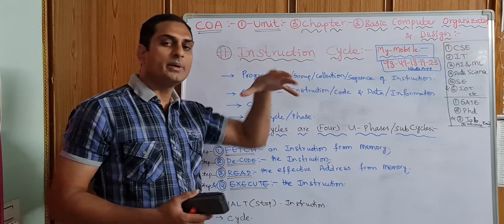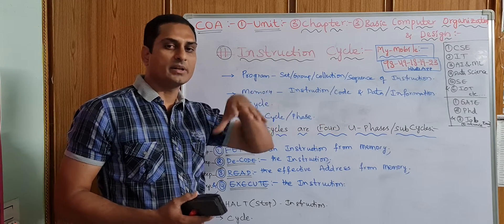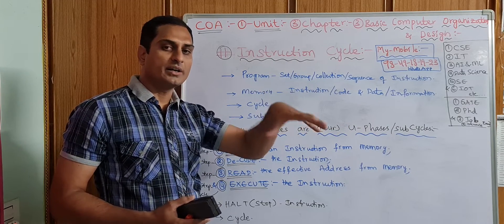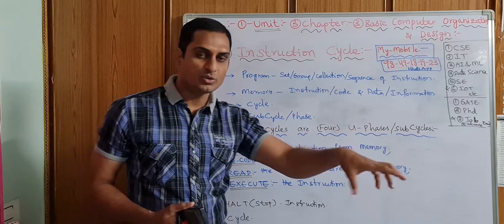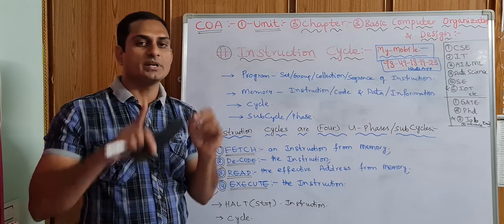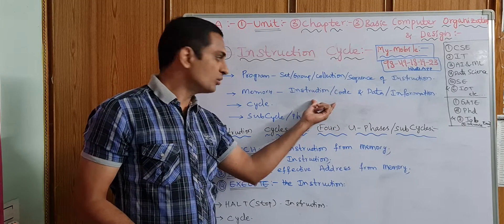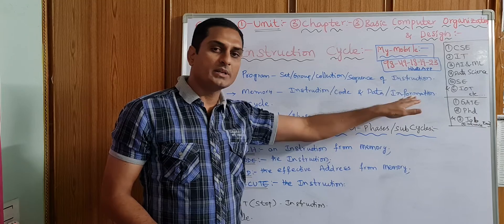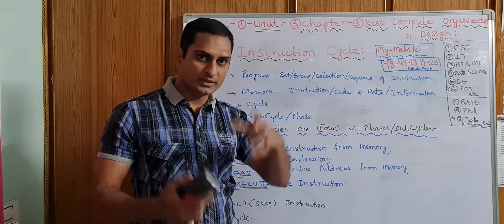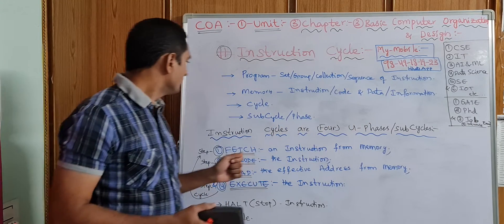That will be stored in the memory, in the memory of the computer: RAM, ROM, and hard disk. The instruction will be stored in the register in the form of zeros and ones. That is instruction or code. Any program, instruction or code and data or information will be stored. That will be fetched and that will be executed.